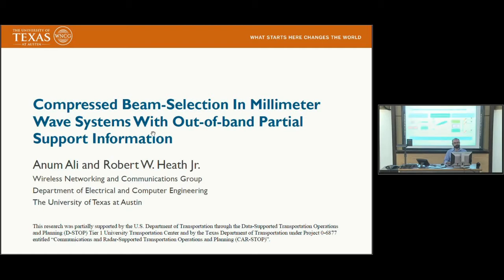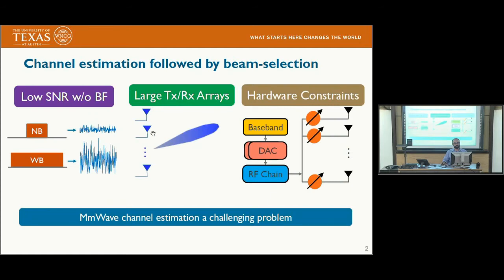The problem of beam selection in millimeter wave systems — what beam to use at the transmitter and receiver — can be solved if you have channel state information. But getting the channel state information in millimeter wave systems is hard, first because the pre-beamforming signal-to-noise ratio is very low, and secondly because there are a large number of transmit and receive antennas, so you have to estimate a large number of coefficients.